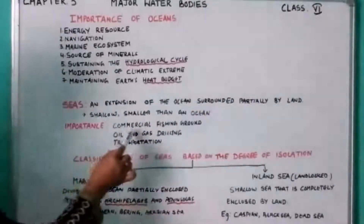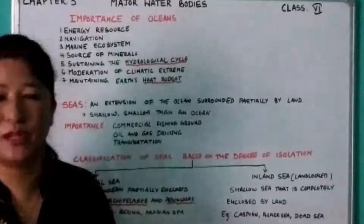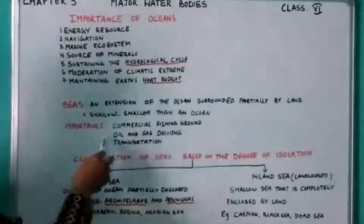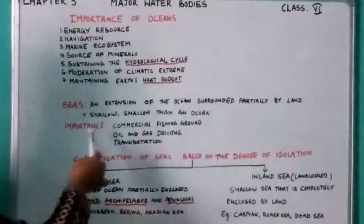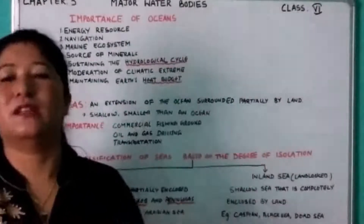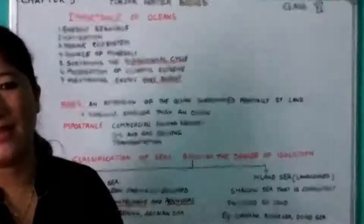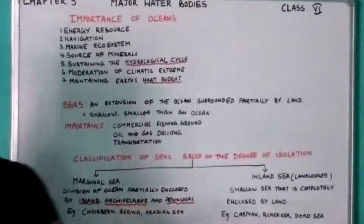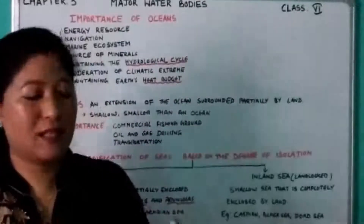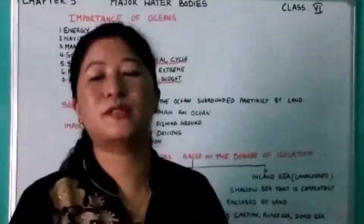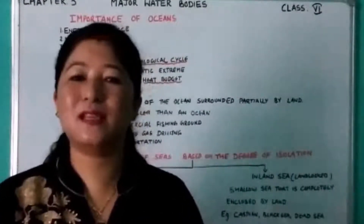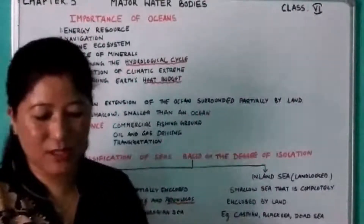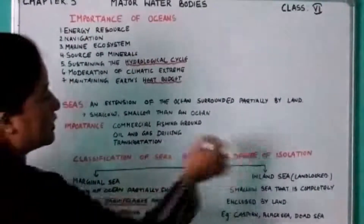Now the importance of seas. First: commercial fishing ground. Some seas in the world are rich in fish and have developed as some of the richest fishing grounds in the world. Number two: oil and gas drilling — from some seas we can drill petroleum and natural gas, which are important sources of energy. Number three: transportation. Seas play an important role in international trade; 90% of goods traded in the world are transported using sea routes.